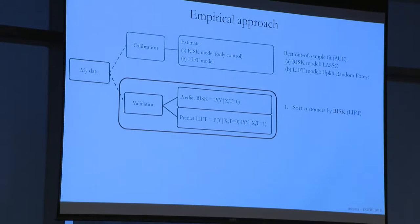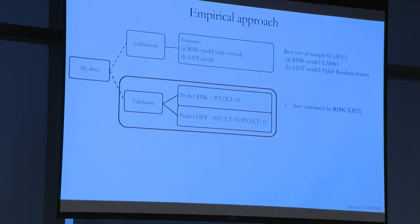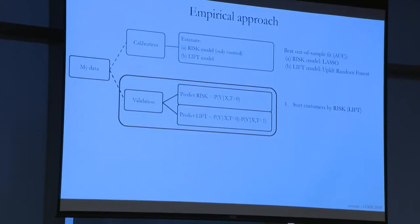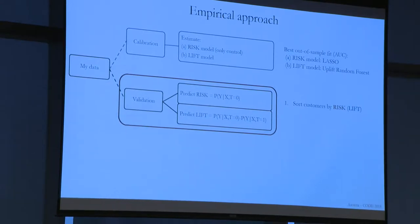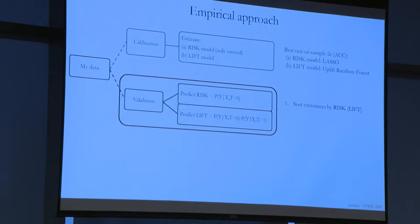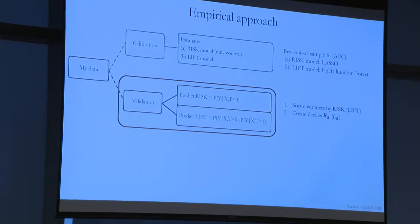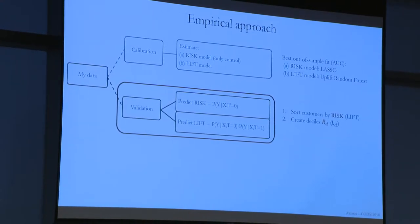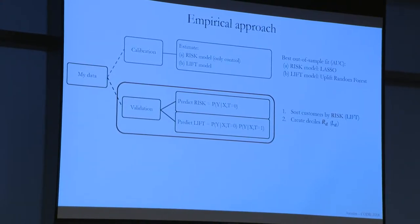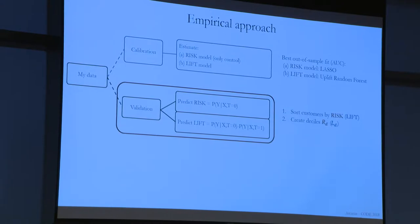I sort customers on their lift, as the firm would do. When sorted by risk, I split into ten groups — computing the deciles to bucket people by highest risk, second highest, and so on. Alternatively, I do the same for the high-lift group — sorting people by expectations on either how they will churn or how they will respond.